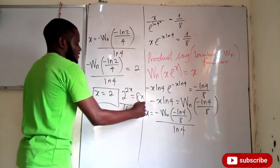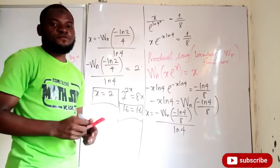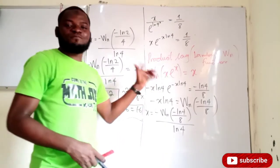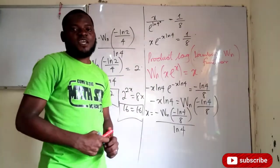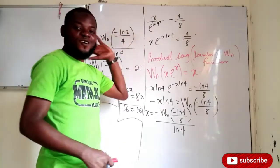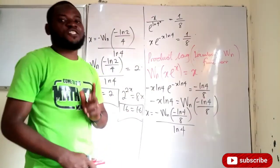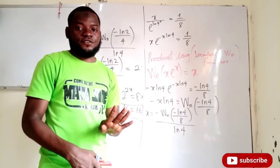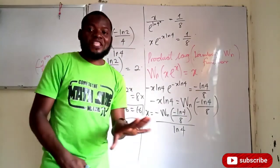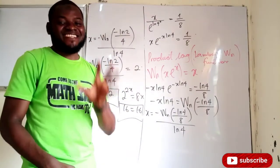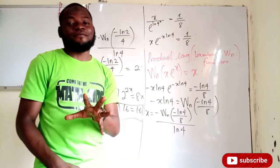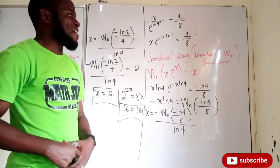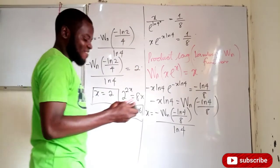So we understand this now. That is the method we may not have been exposed to in school — we call it the product log or the Lambert W function. Another way of solving this particular question is by using the Newton-Raphson method; I'll be talking about that after our calculus class so you can understand it very well.